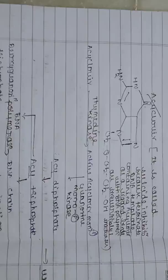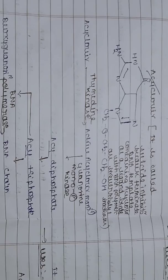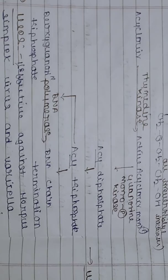Acyclovir is one of the purine nucleotides, and its structure is shown here. Acyclovir is also called a suicide inhibitor because it terminates the DNA template. It acts as a ligand, binding to the DNA polymerase enzyme and inactivating it irreversibly.